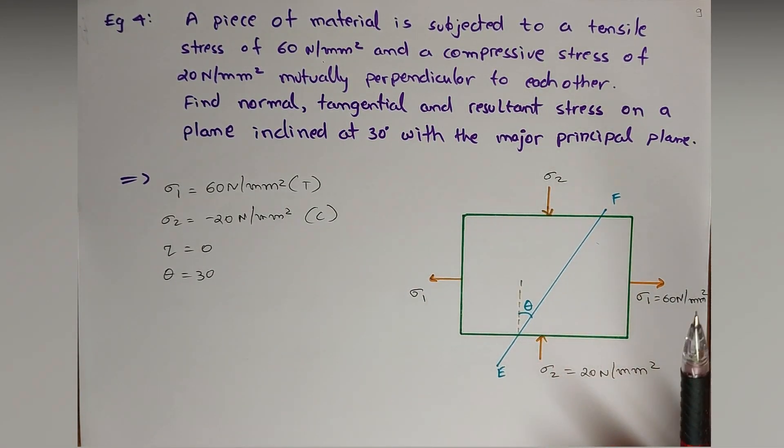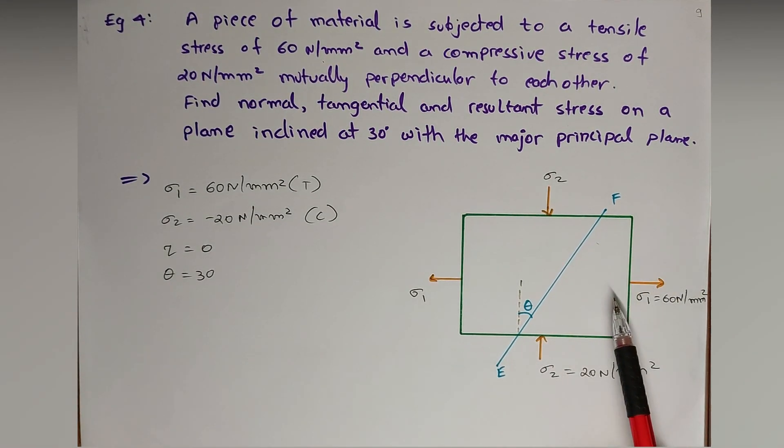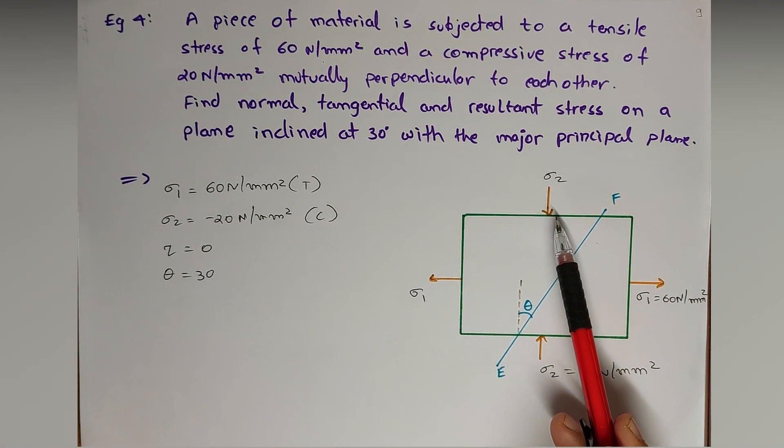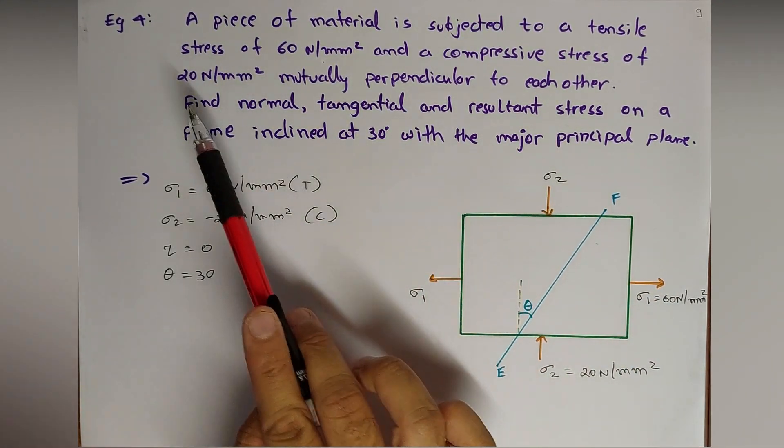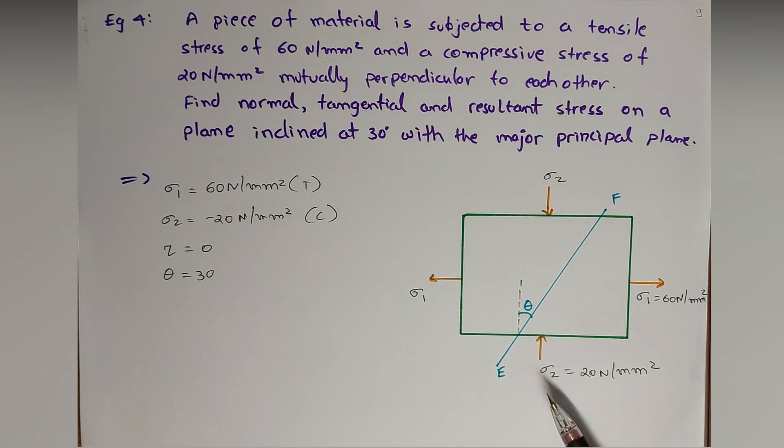This is a strained material. A 60 Newton per mm square force is acting in tensile nature, and sigma 2 is compressive, mutually perpendicular to each other. Its value is 20 Newton per mm square, compressive in nature.